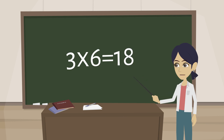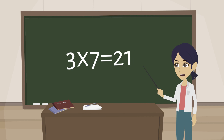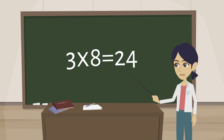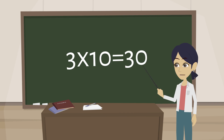3 6s are 18, 3 7s are 21, 3 8s are 24, 3 9s are 27, 3 10s are 30.